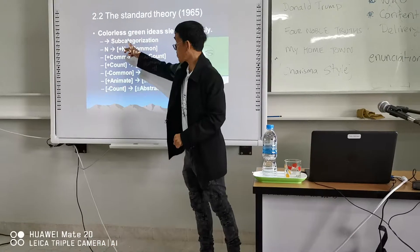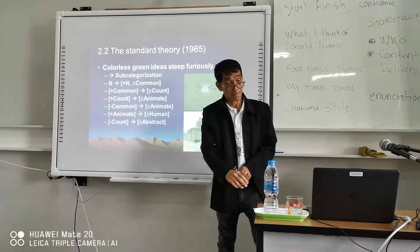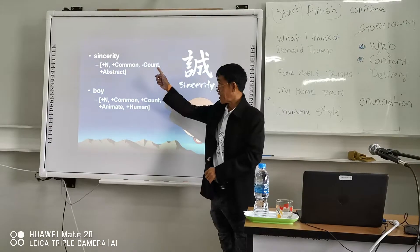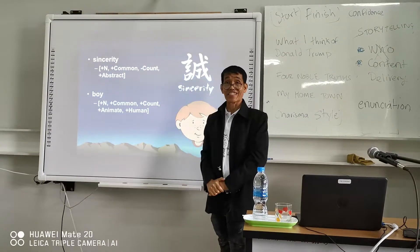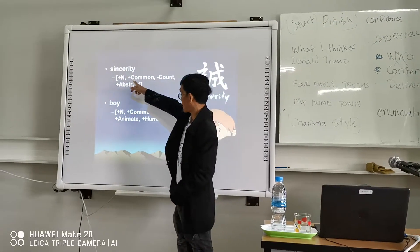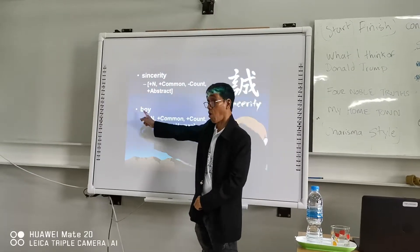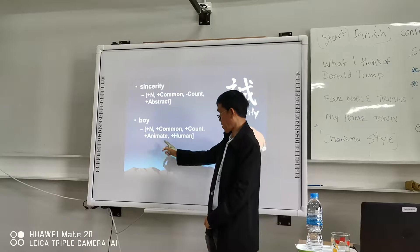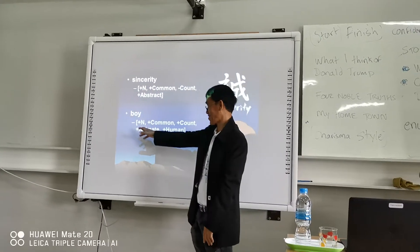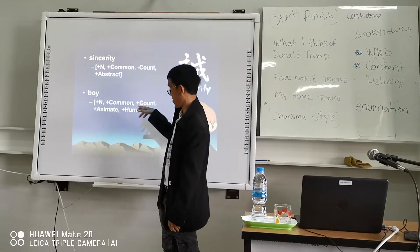It is called sub-categorization of this sentence. If you analyze the word 'sincerity', you would put minus here, plus here, plus here, minus here, plus here. What about the word 'boy'? The sub-categorization would be something like this — minus all this, minus, okay, all of this, and plus all of this inside.